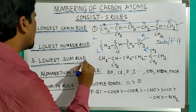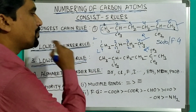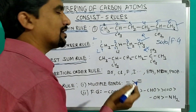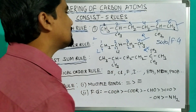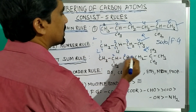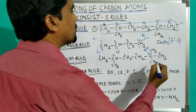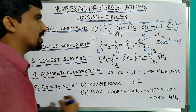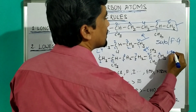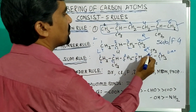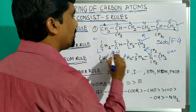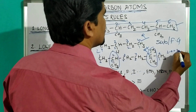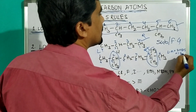Now the third rule is the lowest sum rule. In the lowest sum rule, if more than one substituent, functional group, double bond, or triple bond is there, we must assign the numbers first. Left to right: one, two, three, four, five, six. Right to left: one, two, three, four, five, six. Now find the sum. In the left to right direction, the substituents are at positions two and five, and at five there are two substituents. So the sum is two plus five plus five, which equals twelve.